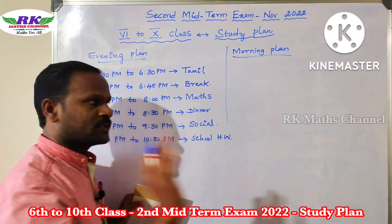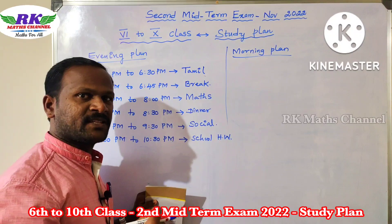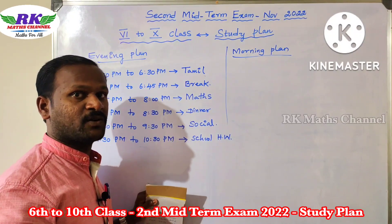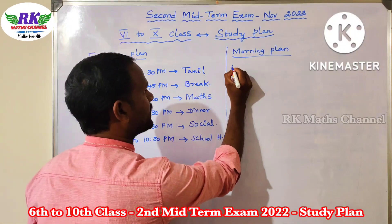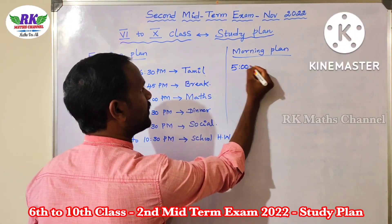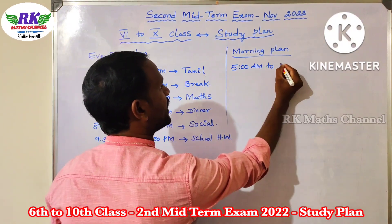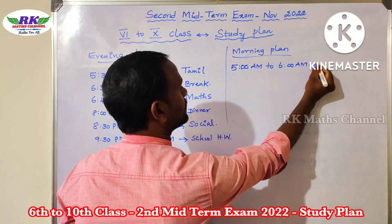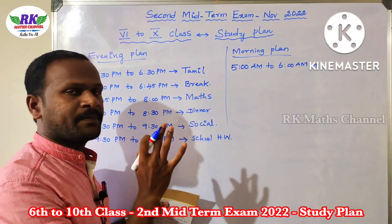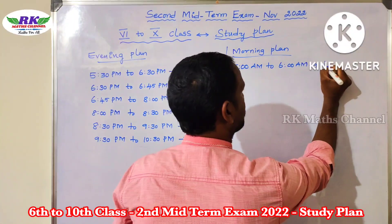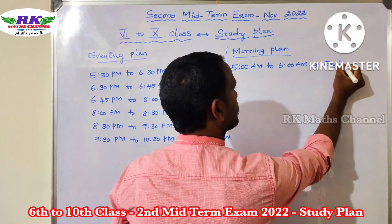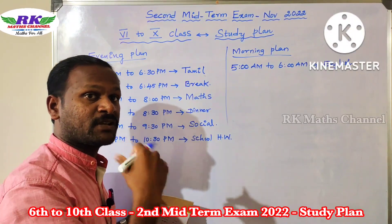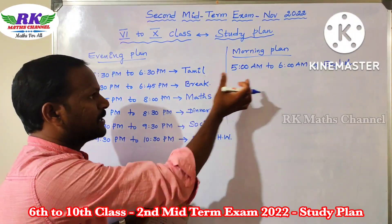Morning plan: mostly we can wake up at 4:00 or 5:00. So, 5:00 AM to 6:00 AM — early morning — English.